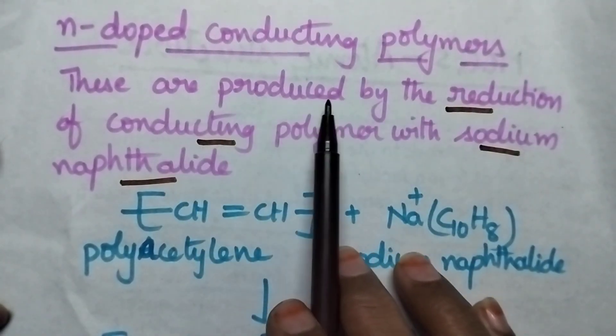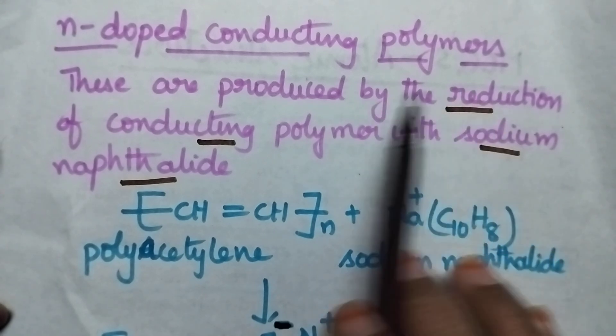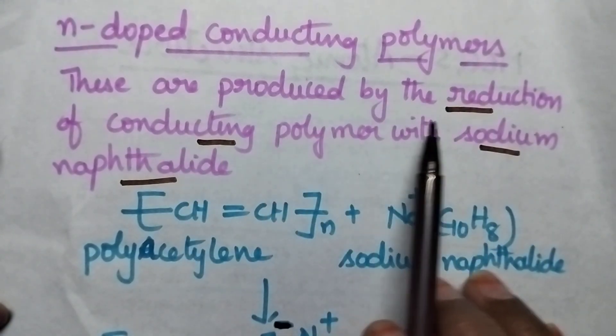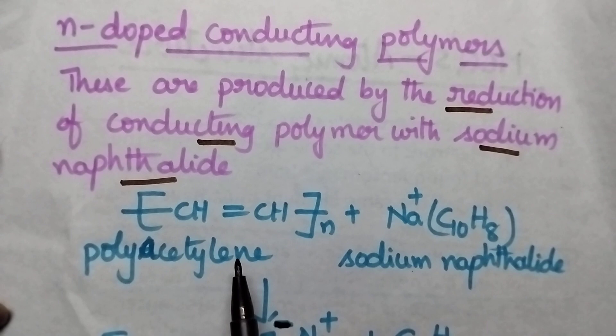These n-doped conducting polymers are obtained by the reduction of conducting polymer with sodium naphthalate. Best example for conducting polymer is polyacetylene.